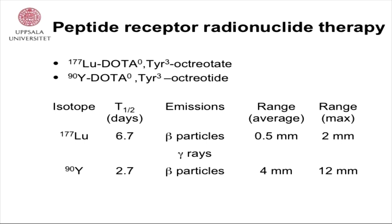Now a few words about peptide receptor radionuclide therapy — PRRT — in patients with NETs. There are two possibilities: lutetium octreotate or yttrium octreotide. We use only lutetium. Lutetium has a half-life of about a week; it emits beta particles and also gamma rays. Yttrium has a shorter half-life of two and a half days, only emitting beta particles, but with more energy than those from lutetium.